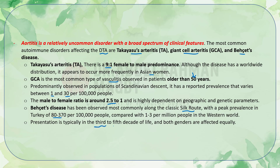Behçet's disease typically presents in the third to fifth decade of life, with both genders affected equally. To summarize the aortitis spectrum: Takayasu arteritis affects young Asian women; giant cell arteritis affects patients older than 50 with a male predominance; and Behçet's disease is prevalent along the Silk Road, especially in Turkey, with equal gender distribution.